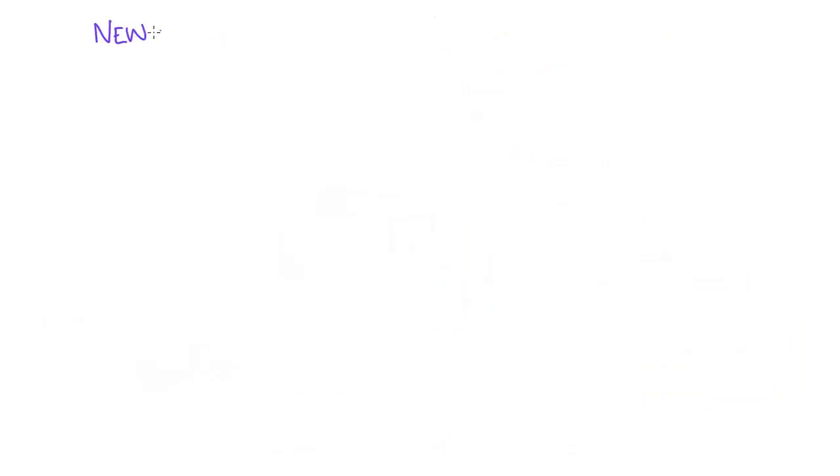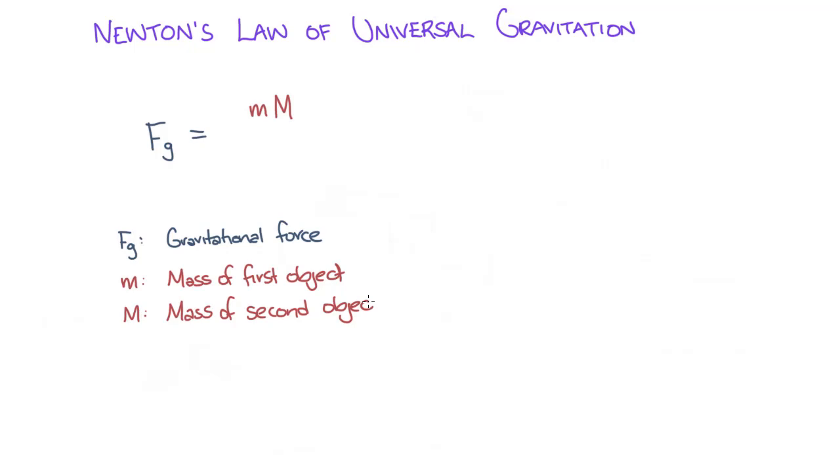So, Newton's law of universal gravitation is as follows. The gravitational force is equal to the mass of the first object times the mass of the second object. Now, we'll divide by distance, because increasing the distance tends to decrease the effect of gravity. So the equation is divided by the squared distance between the objects. And finally, it is multiplied by a constant value known as big G, which is the universal constant of gravitation.